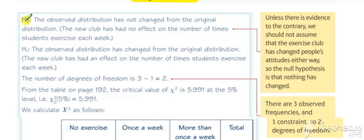So usual statements for your null and the alternative put in context. Number of degrees of freedom, number of cells, take away number of constraints, under degrees of freedom is 2. Critical value.